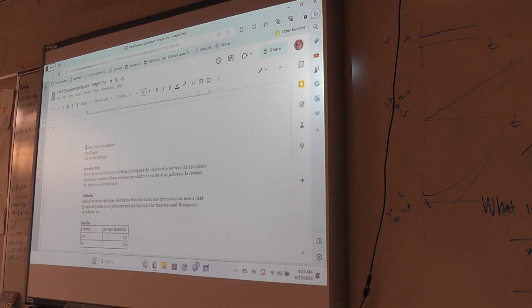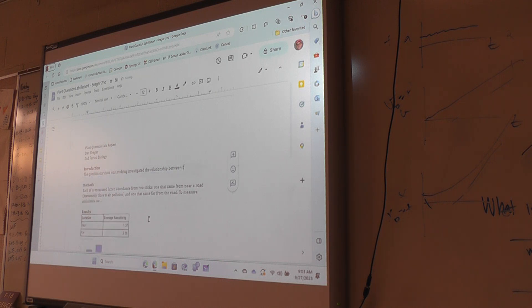So here's how I always start. I start by making sure that my title is accurate. Plant question, lab report. This isn't seventh period biology. It's second period biology. And then the introduction, I'm going to type something here, and you can, too, right now. You can type this along with me. The question our class was studying investigated the relationship between,